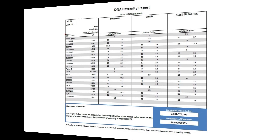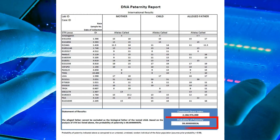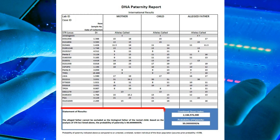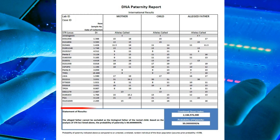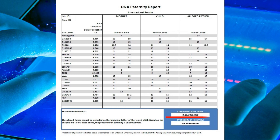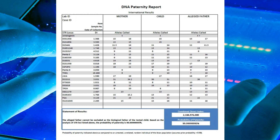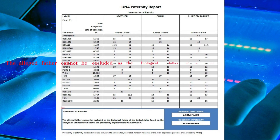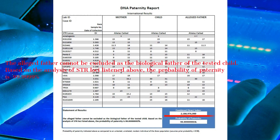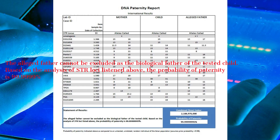If the tested father is confirmed to be the biological father of the child, the result is a positive paternity inclusion. In such cases, the probability of paternity will exceed 99.9%. The statement of results in the report will state: 'The alleged father cannot be excluded as the biological father of the tested child based on the analysis of STR loci listed above.'